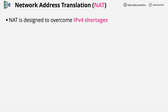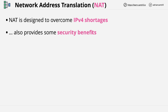Private addresses, such as those in the 10.0.0.0 range, can be used in multiple places but can't be routed over the internet. So to give internet access to private devices, we need to use network address translation. In addition to this, NAT also provides some additional security benefits, which I'll be covering soon.